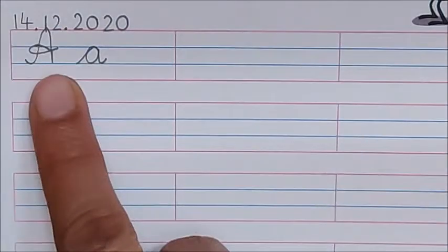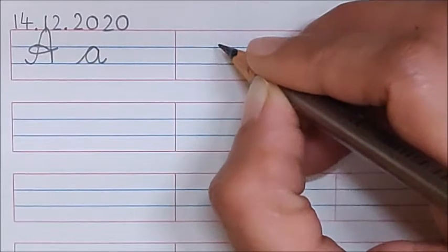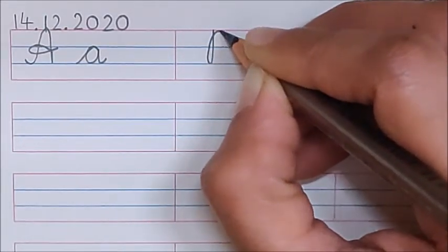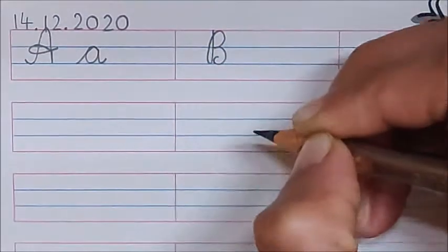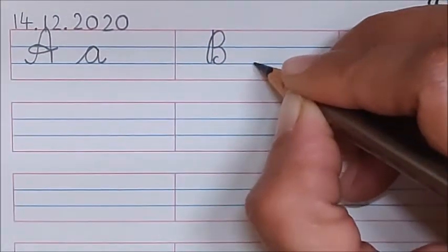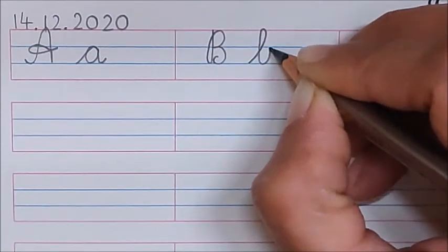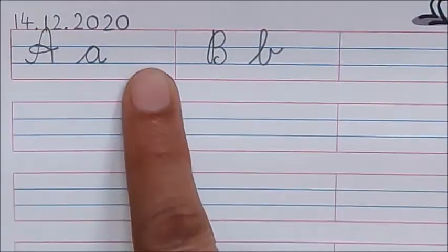What comes after A? B. So, here we will write down capital cursive B. Standing line, go up. One round. One more round. Turn and turn inside. B. And this is lowercase B in cursive.